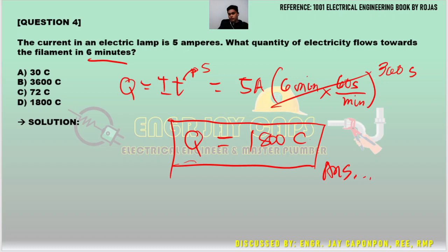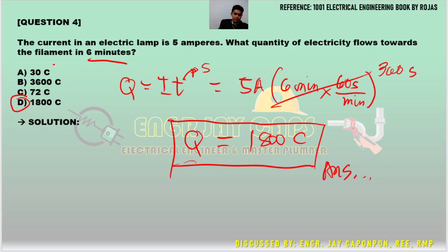Always be careful with the units. If you forget to convert minutes into seconds, you will arrive at the wrong answer — letter A. The correct answer requires the conversion. If you do not convert, you get only 5 times 6, which is already in the choices but is wrong.